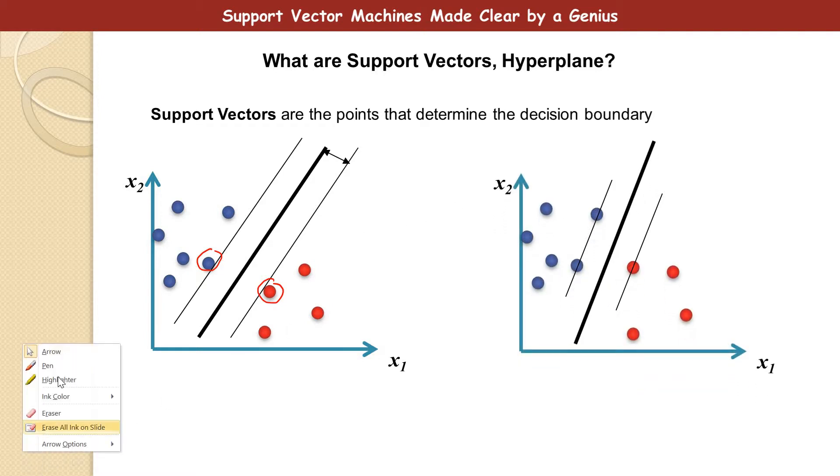In this case, how many Support Vectors do we have? We have 3 Support Vectors, and we have this point here, we have this point here, and we have this point here. So we have 3 Support Vectors here,